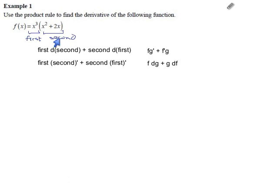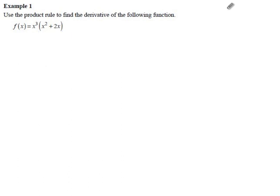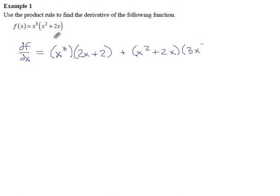So without further ado, let's dig into this thing. The product rule says that the derivative of this, df dx, is the first part times the derivative of the second part, which would be 2x plus 2. I'm going to start doing these power rules faster because I think you've had some practice. So this is first d second, plus second part x squared plus 2x times derivative of the first part, which would be 3x squared.